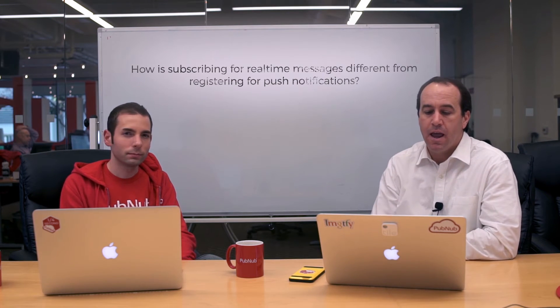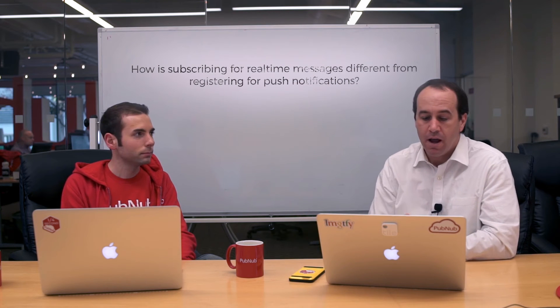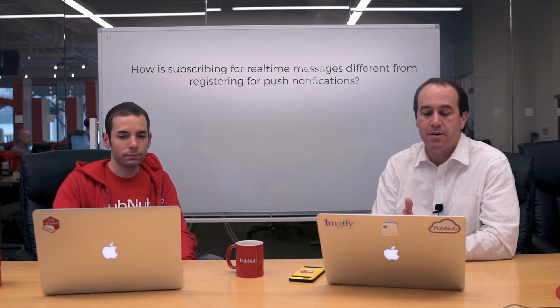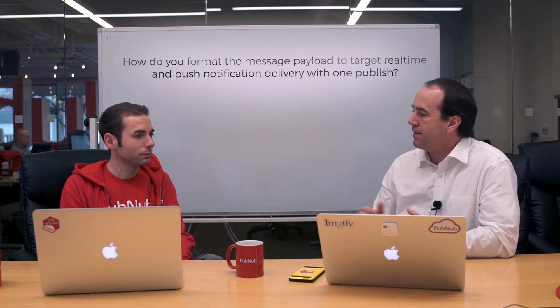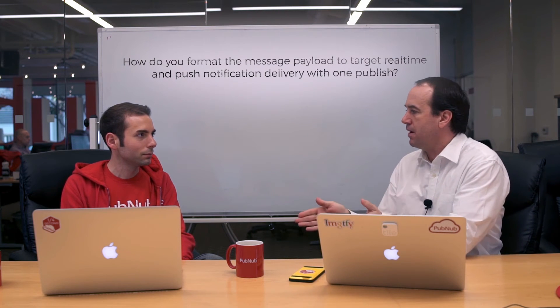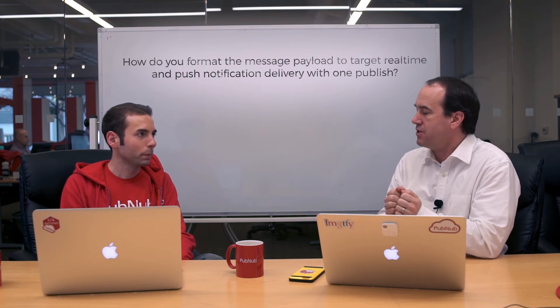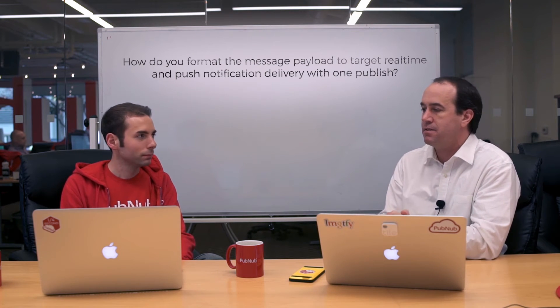When the app is in the foreground, you will receive both the real-time message and, slightly thereafter, the push notification from APNS or GCM. There is a method for each platform — in particular with iOS, it's didReceiveRemoteNotification — and you would simply receive the message and then just swallow it, do nothing with it, because you've already got the real-time message.